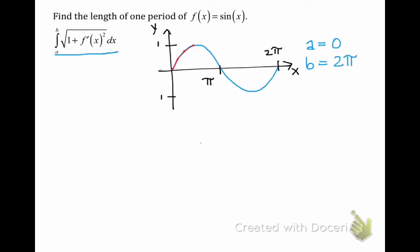You could also use different limits, like a equals pi and b equals 3 pi, as long as your interval is 2 pi units long so that we get exactly one period of our graph.